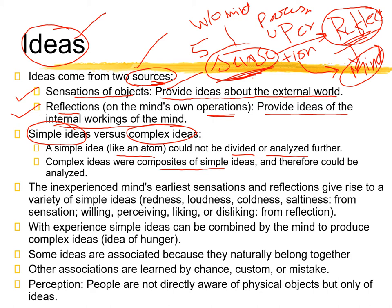When you combine many simple ideas, you get a complex idea. Simple ideas come from earliest sensations and reflections — redness, loudness, coldness, saltiness. From reflection you get: willing, perceiving, liking, disliking. These are all simple ideas that are easy to understand.